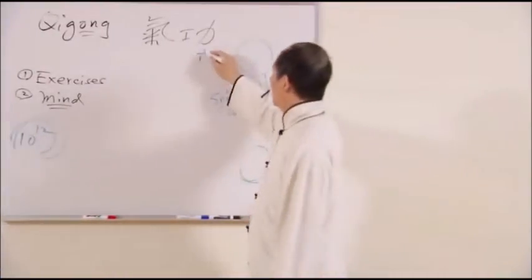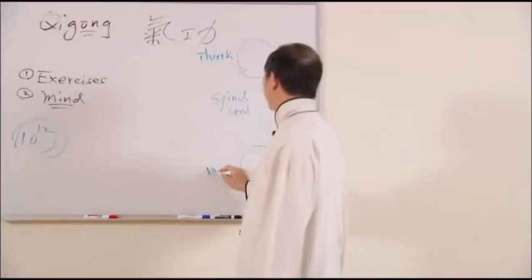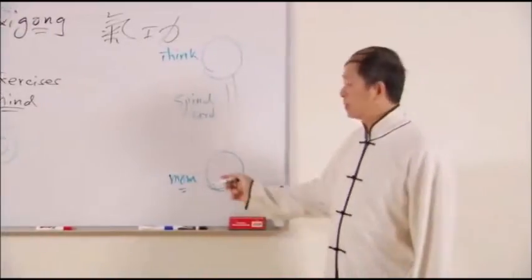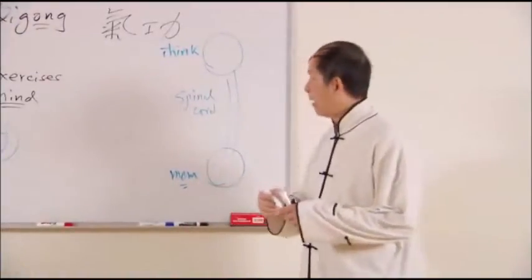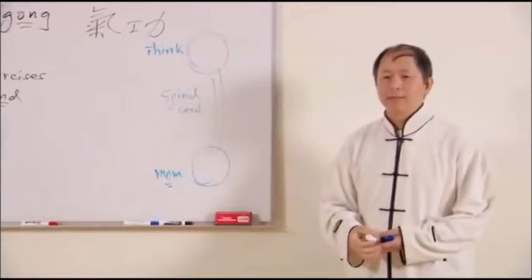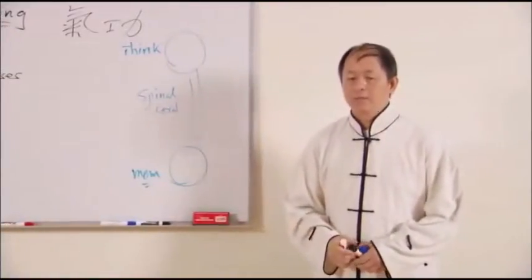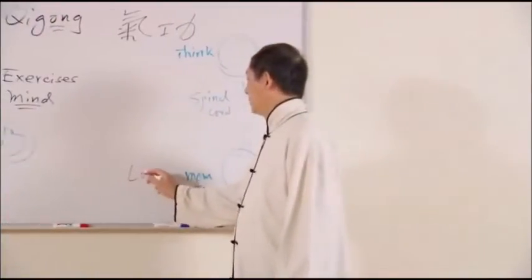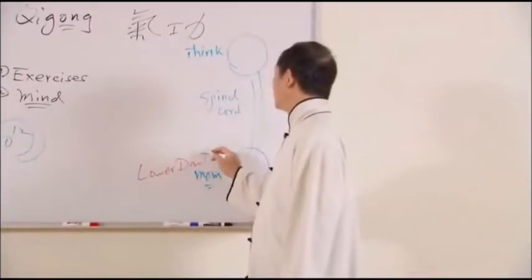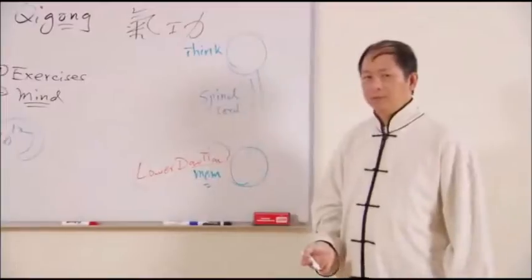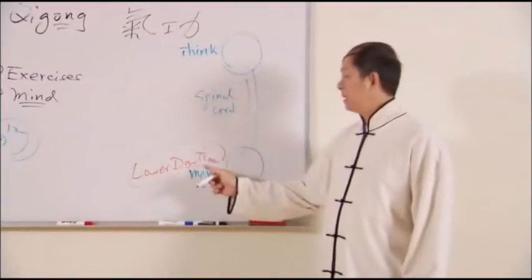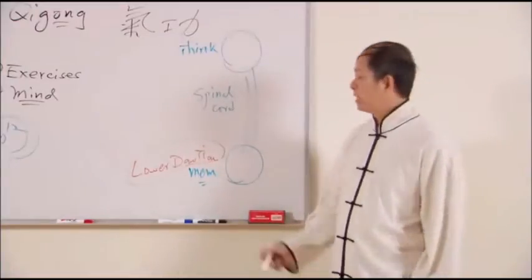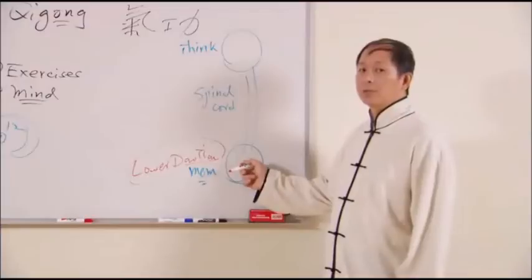This brain thinks. This brain has memory. That means this brain stores the data. This brain stores the charge. Now, there's a Western discovery in 1996. When you look at 2000 years ago, Chinese talk about this called lower dan tien. Dan tien means where the energy can be produced. Dan means elixir, elixir means qi. Tien means field. Chinese already talked about this place can produce qi and store qi.